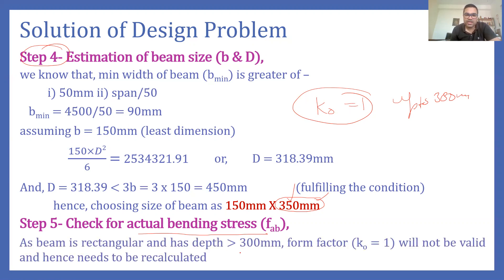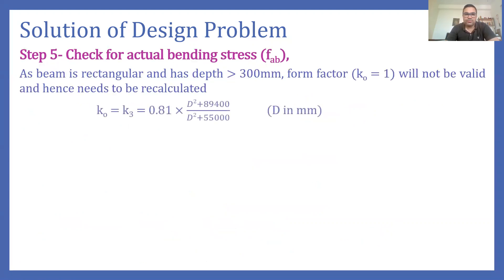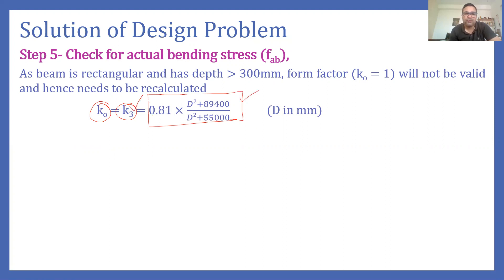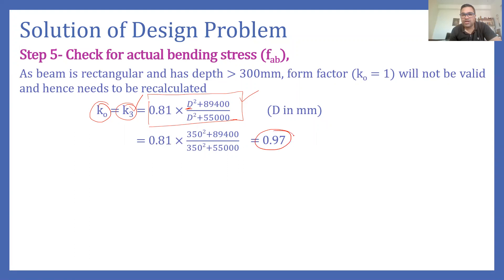Since the depth of the beam is greater than 300 mm, the form factor k-naught equal to 1 is not valid. We need to find the actual value of k-naught and the actual value of Z. Because our depth exceeds 300 mm, k-naught becomes k3. The formula for k3 was introduced in part one. Substituting d = 350 mm into this formula gives us k3 = 0.97.